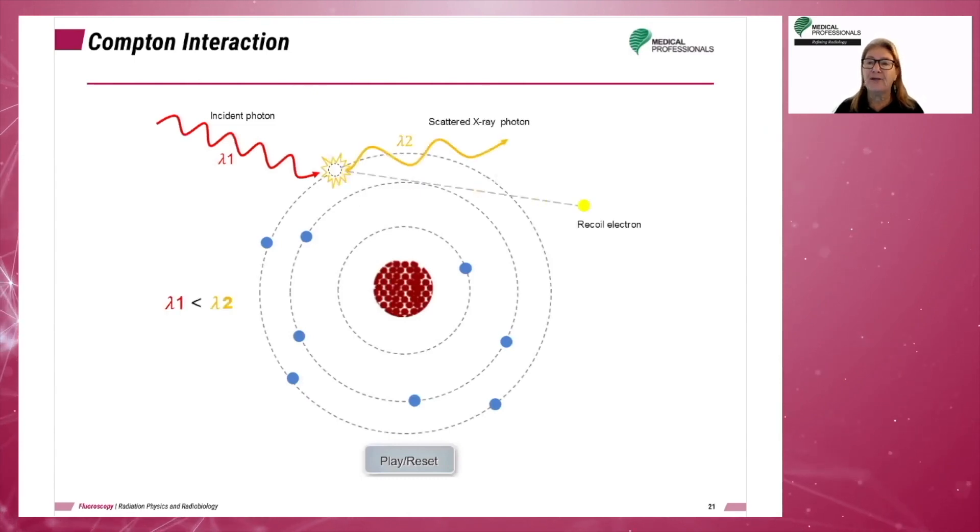The next interaction is Compton interaction. Compton is what we're typically referring to when we say scatter. This is the type of scatter which will contribute to a technologist's dose. Compton interactions occur at energy levels greater than 70 kV p. The higher the kV p, the more scatter will be created.